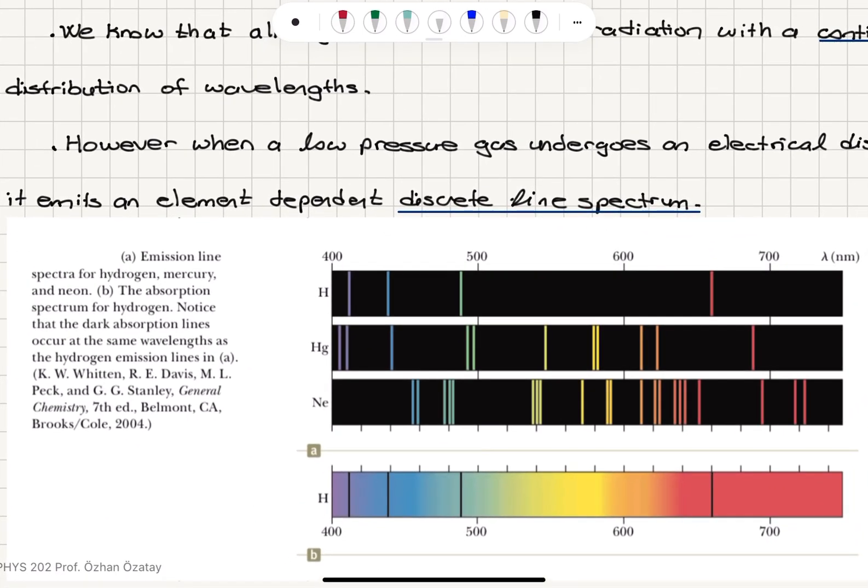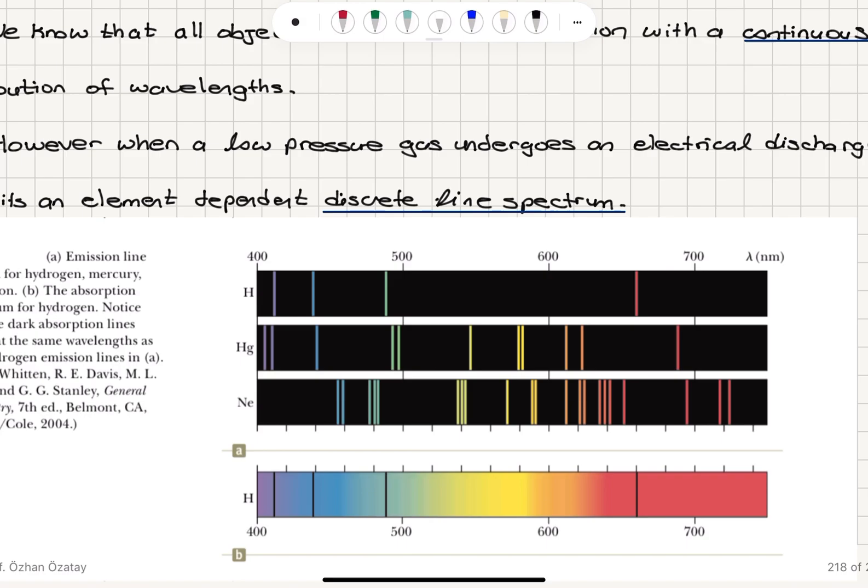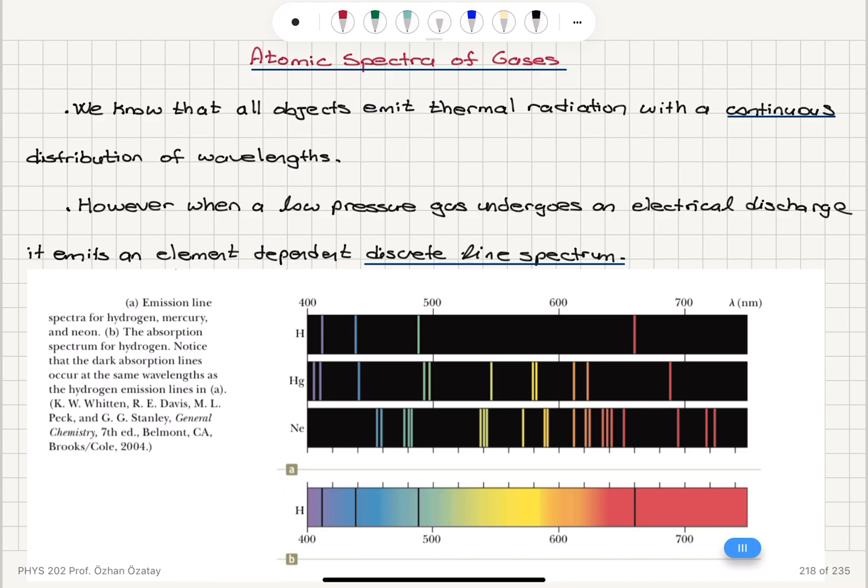You can see that the emission spectra for hydrogen, mercury, and neon completely look different. We have emission in the visible spectrum and these discrete lines basically provide a signature for the type of atom we are looking at. Whether it's hydrogen, mercury, or neon, by looking at its signature emission spectrum, we can tell.